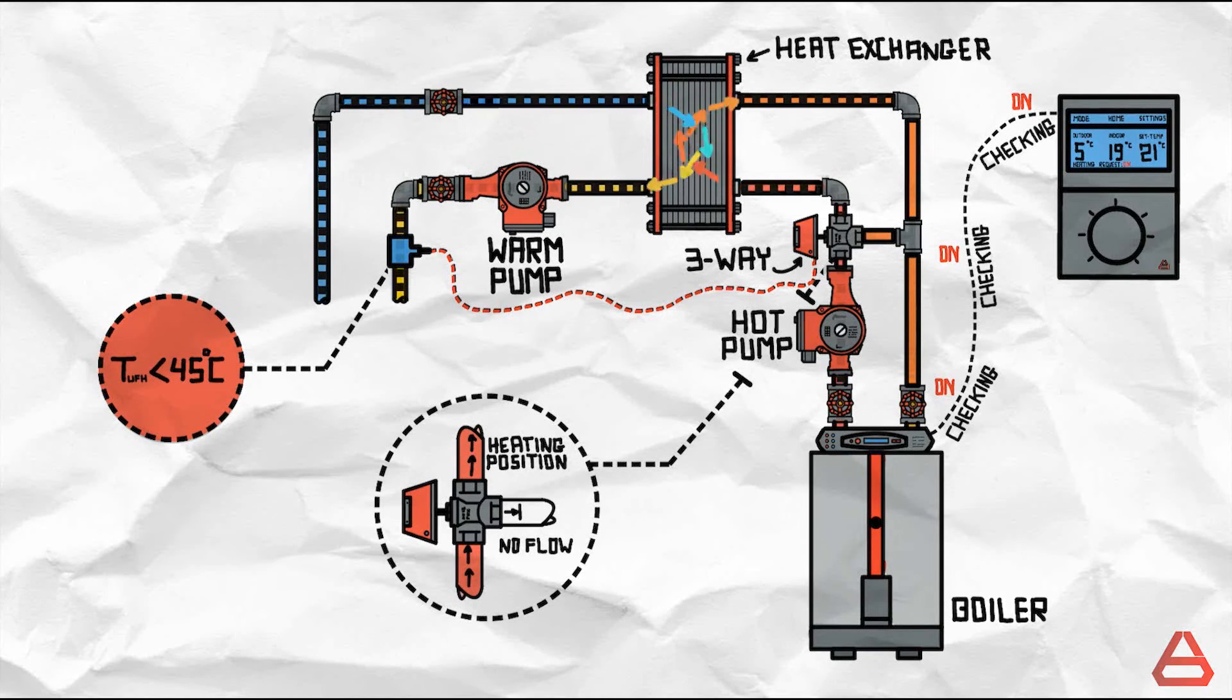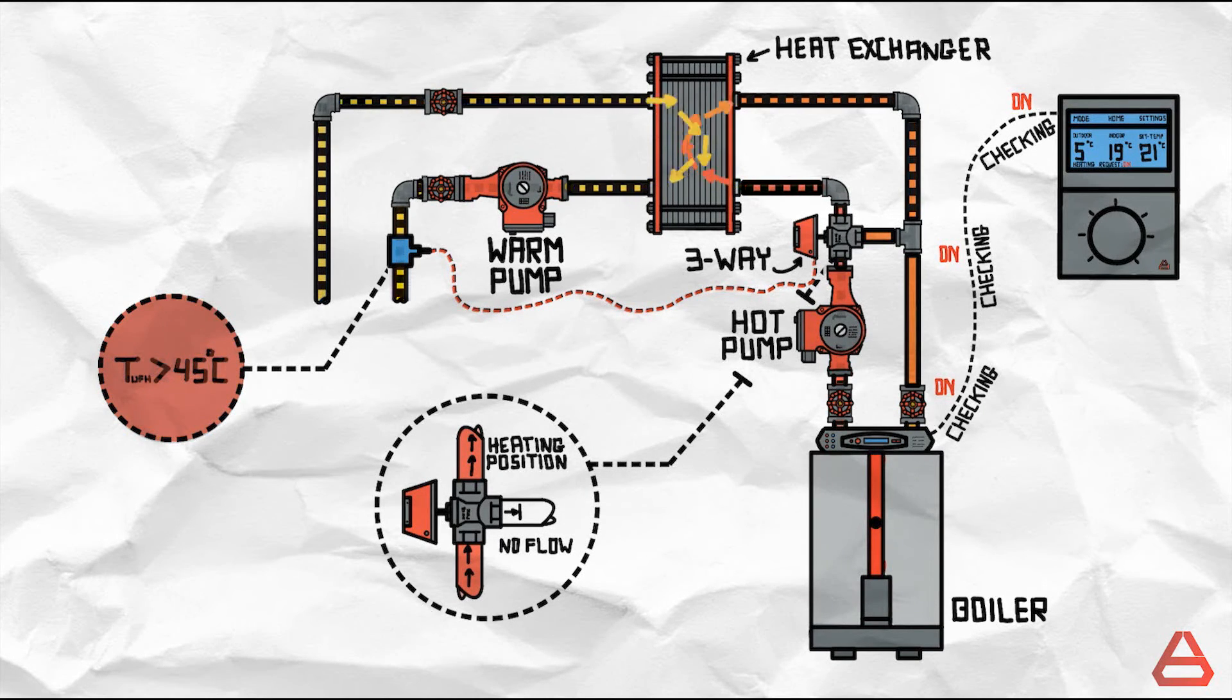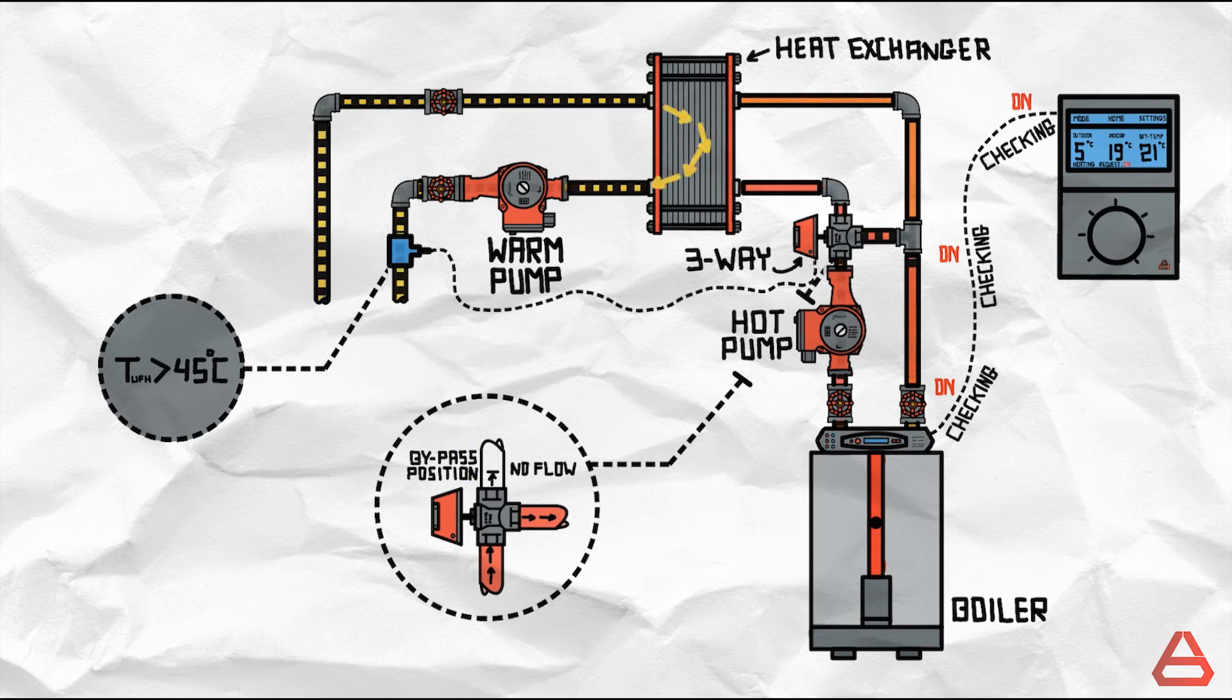After some time the water flowing in the warm circuit has reached a few degrees above 45. The sensor detects this and the three way valve assumes bypass position and redirects the hot water back to the boiler instead of the heat exchanger. The warm circuit temperature increase now stops.